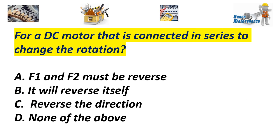For a DC motor that is connected in series, to change the rotation, A. F1 and F2 must be reversed. B. It will reverse itself. C. Reverse the direction. D. None of the above. Answer A. F1 and F2 must be reversed.